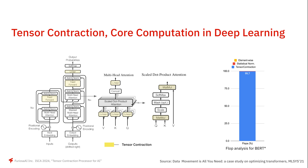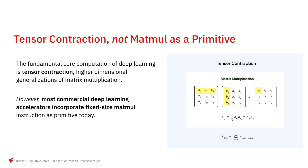Tensor contractions dominate operations in deep learning. This can be seen in Transformers as well, the basic structure of most deep learning models today. Key operators like feed-forward networks, linear, and multi-head attention are tensor contractions. An analysis on BERT on the right shows that 99% of its FLOPs result from these operations. So tensor contraction is a core fundamental computation in deep learning.